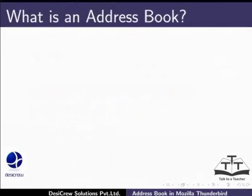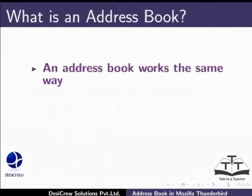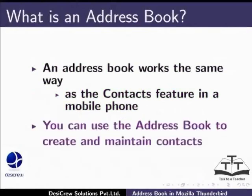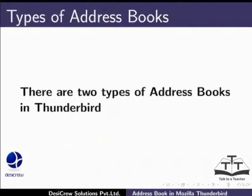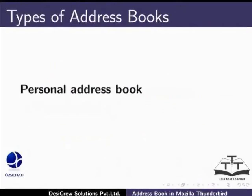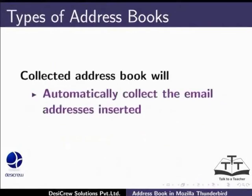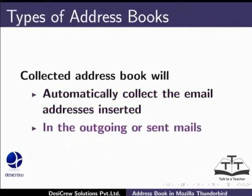What is an address book? An address book works the same way as the contacts feature in your mobile phone. You can use the address book to create and maintain contacts. There are two types of address books in Thunderbird. Personal address book allows you to create new contacts. Collected address book automatically collects the email addresses from outgoing or sent mails.